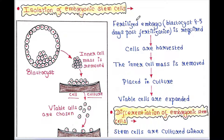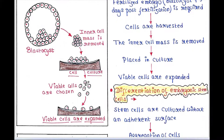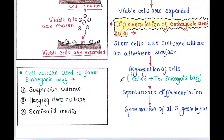For the isolation of embryonic stem cells, a fertilized embryo is required. We take the blastocyst at four to five days post-fertilization. Cells are harvested and isolated from that blastocyst; the inner cell mass is removed and placed in culture. The viable cells are then chosen and expanded further.